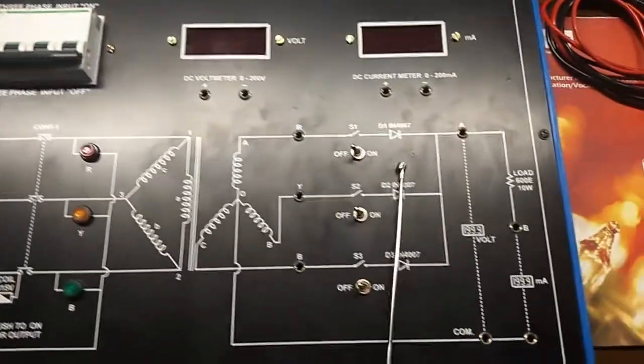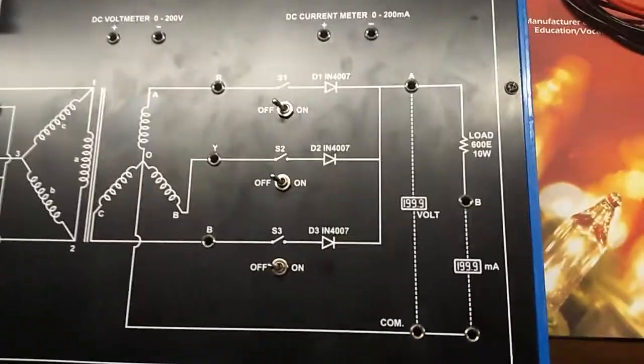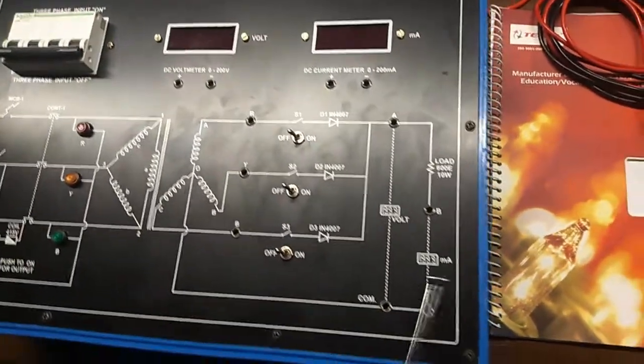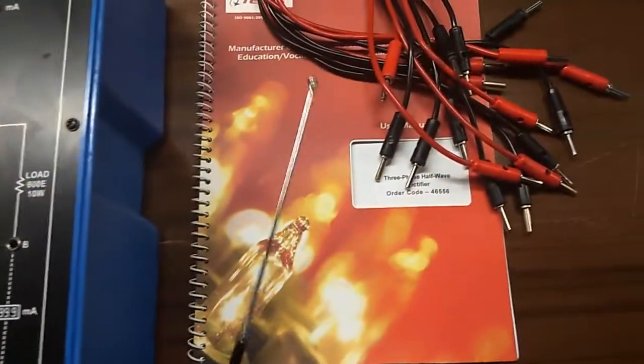These are the diodes used to form half-wave rectification. This is the load, and this is the user manual and patch cord.